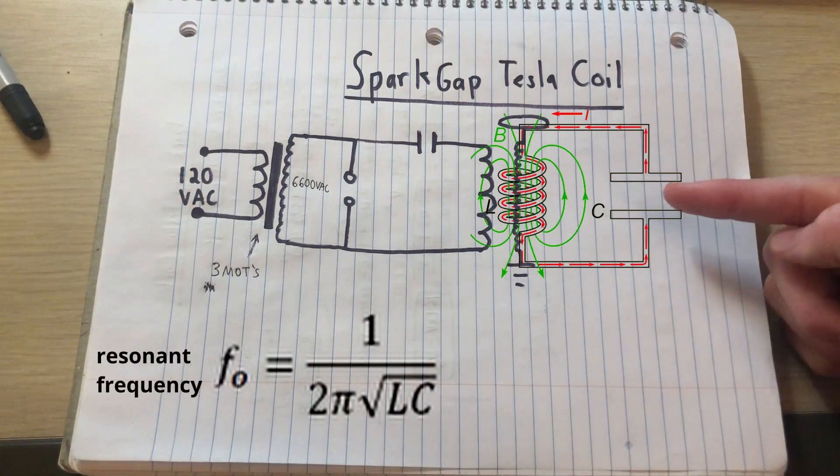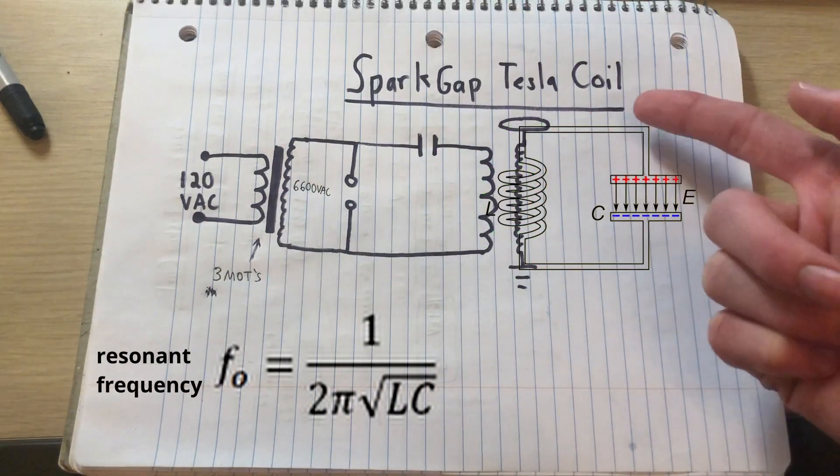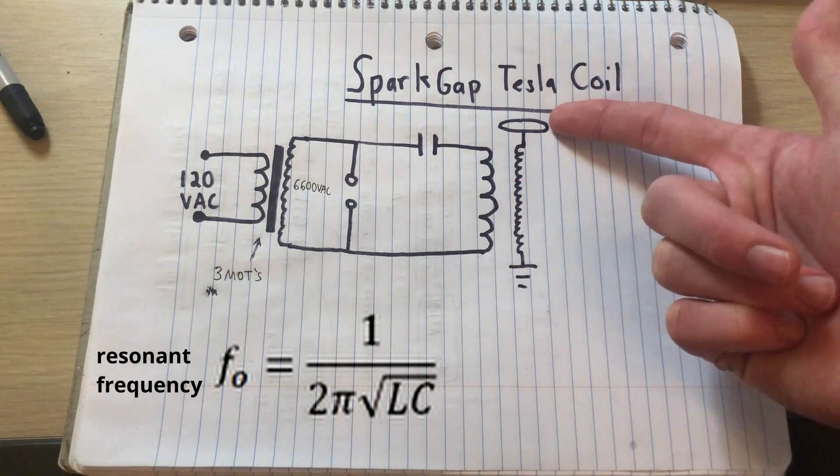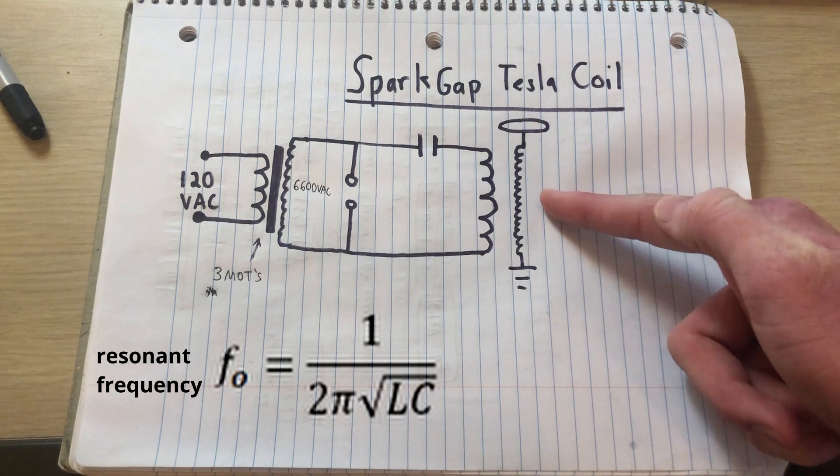The resonant frequency of the secondary circuit in a Tesla coil is mostly determined by the physical dimensions of the top load and the secondary coil.